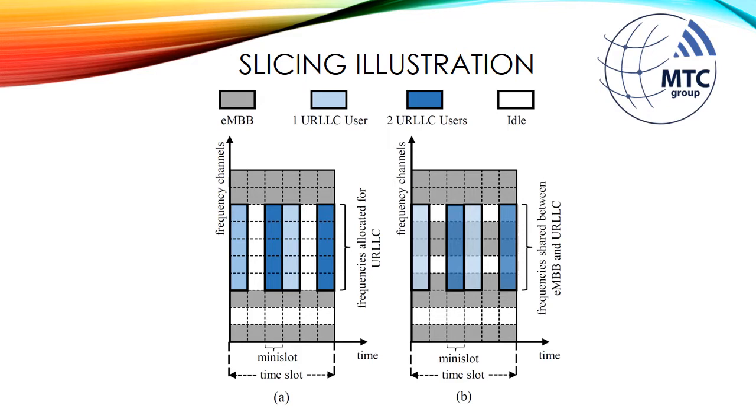The EMBB devices and URLLC devices share the same radio access network. Thus, the radio resources must be shared between both services in an efficient way. In this paper, we study two different network slice strategies for the slicing of radio resources between both services.